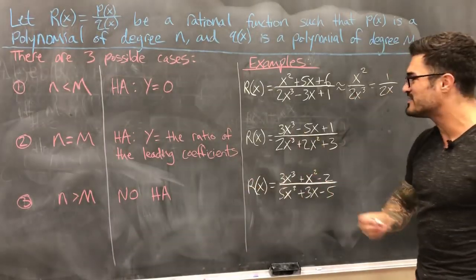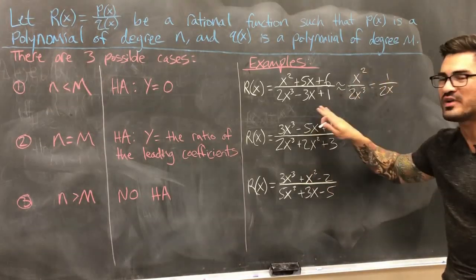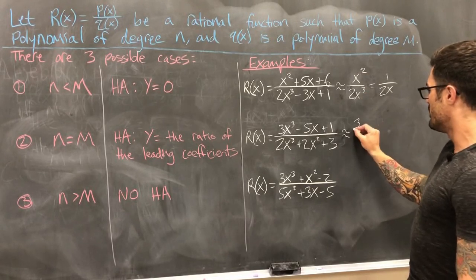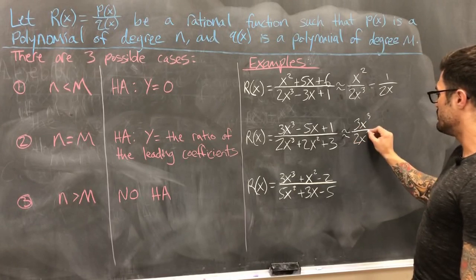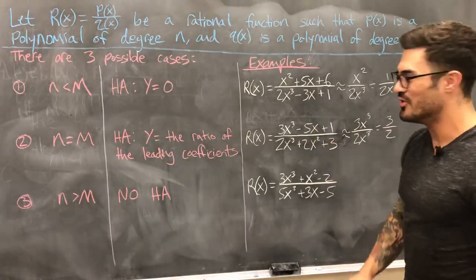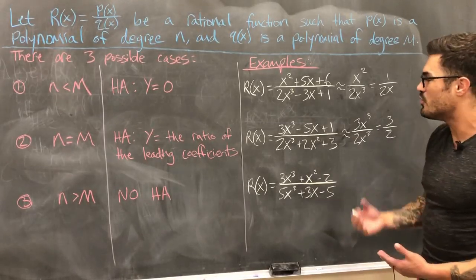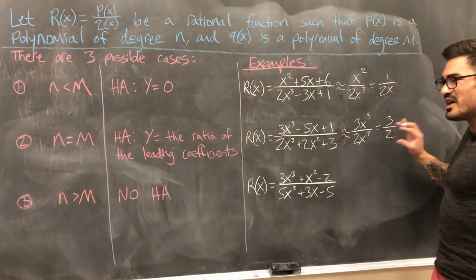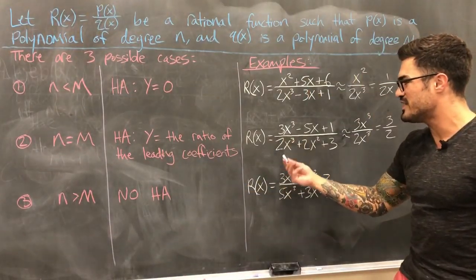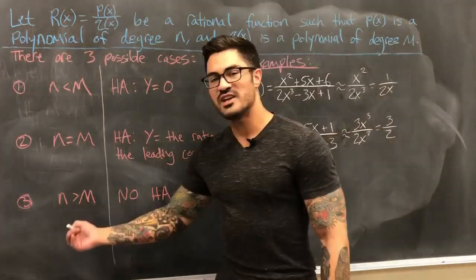For Case 2, where both numerator and denominator have degree 3: for large x, we estimate using only the leading terms, so we get 3x³ over 2x³, which simplifies to 3/2. That doesn't mean the function always equals 3/2 — it means for very large values of x, the function is very close to 3/2. We can estimate the output at very large x with the value 3/2, which is why the horizontal asymptote is y = 3/2, the ratio of the leading coefficients.